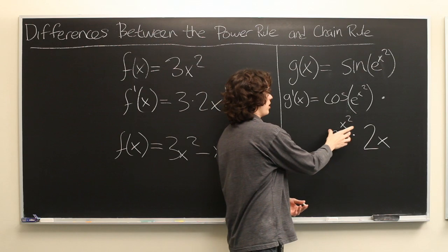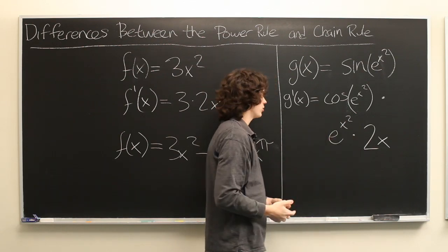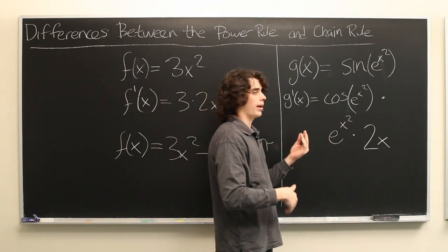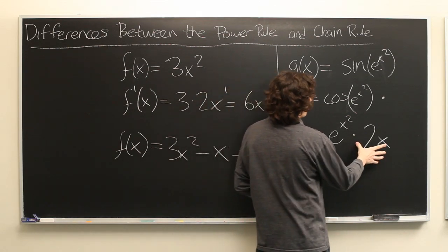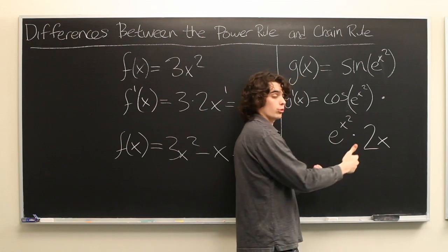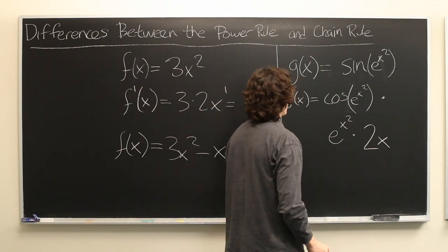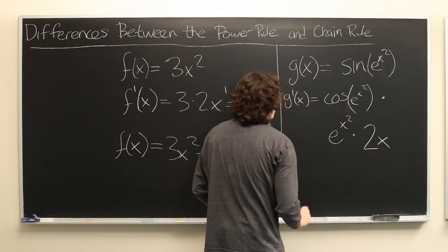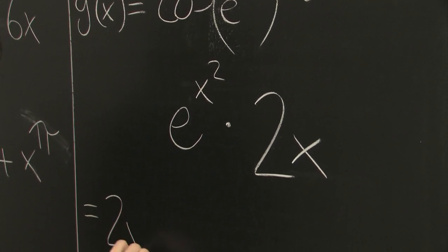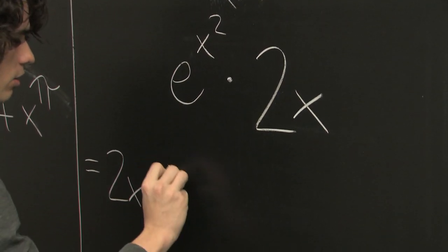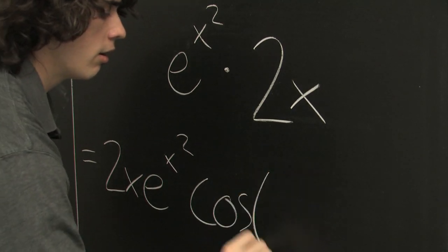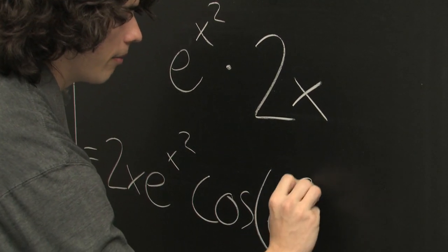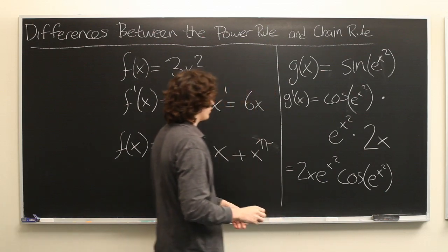And if this were e raised to some more complicated function, such as e to the x cubed minus sine x plus the square root of x, for example, then this would be a little bit more complicated, and you may have to apply the chain rule again. But we can neaten this up a little bit and we get 2x e to the x squared cosine of e to the x squared, which is a lovely function indeed.